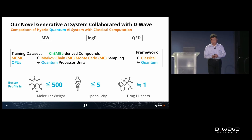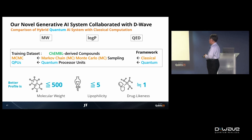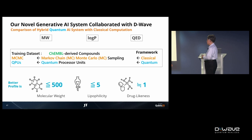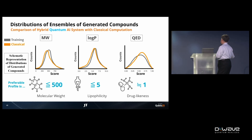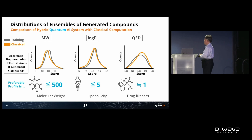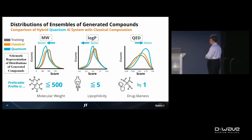Let's look at our own data. I will show three distributions: the training data set (black), classical computation (orange), and quantum computation (cyan blue). The training data set and classical computation are almost the same. However, with quantum annealing computation, the distribution curves were differently shifted and moved toward better regions.